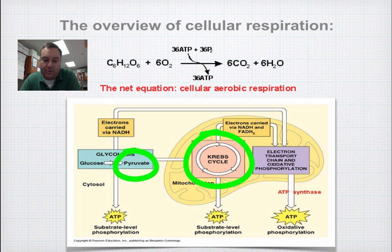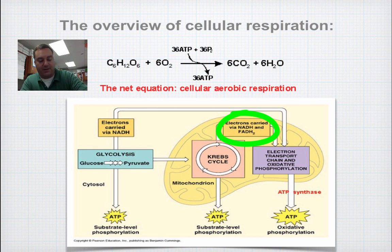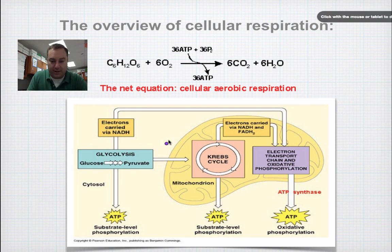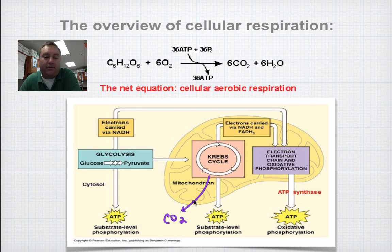The Krebs cycle is going to occur in the matrix of the mitochondria — that's the very inside. The Krebs cycle is going to make some NADH and FADH2, which are also electron carriers. It's also going to create carbon dioxide, which is a waste product. So all the carbon dioxide that you breathe out on a daily basis is made through the Krebs cycle.